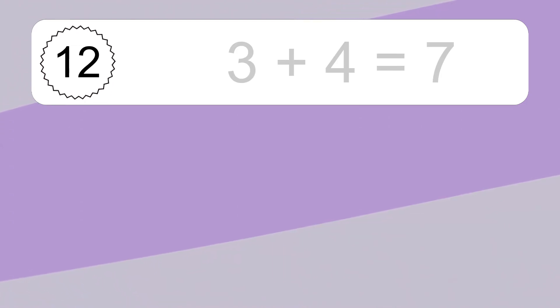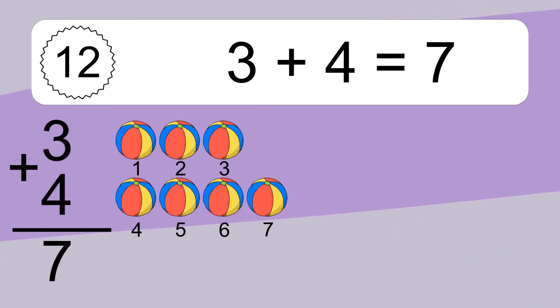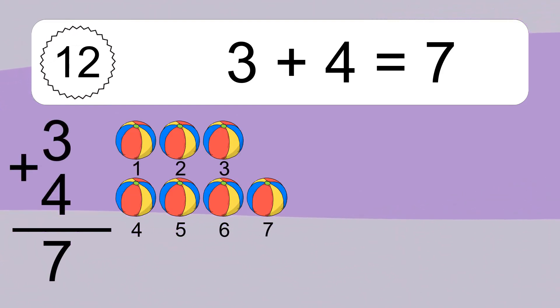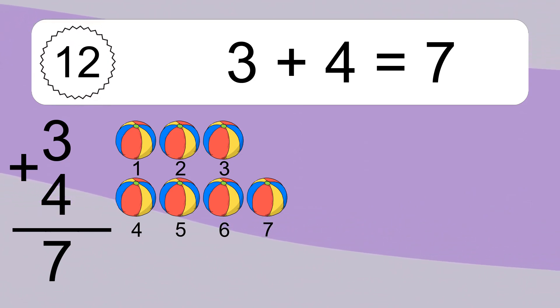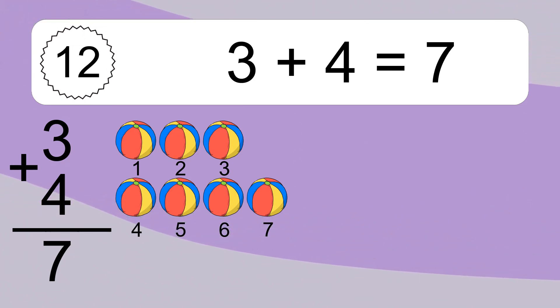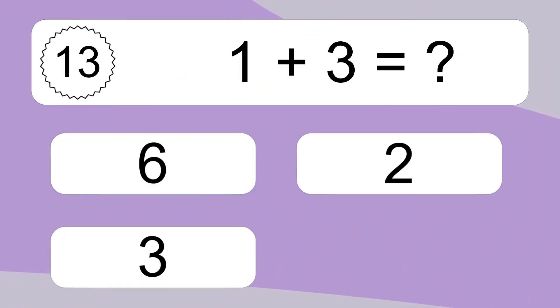3 plus 4 equals what? 3 plus 4 equals 7. Let's count it. 1, 2, 3, 4, 5, 6, 7.